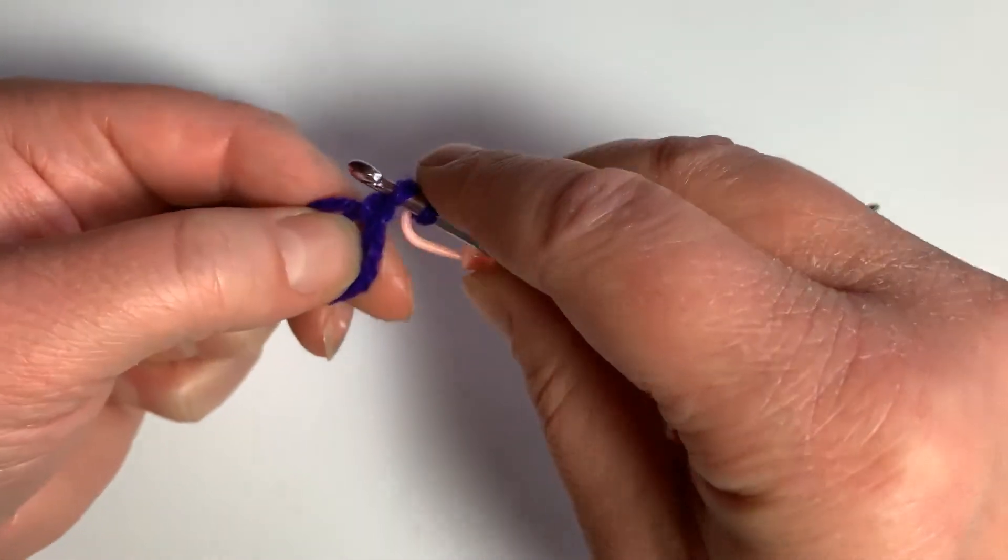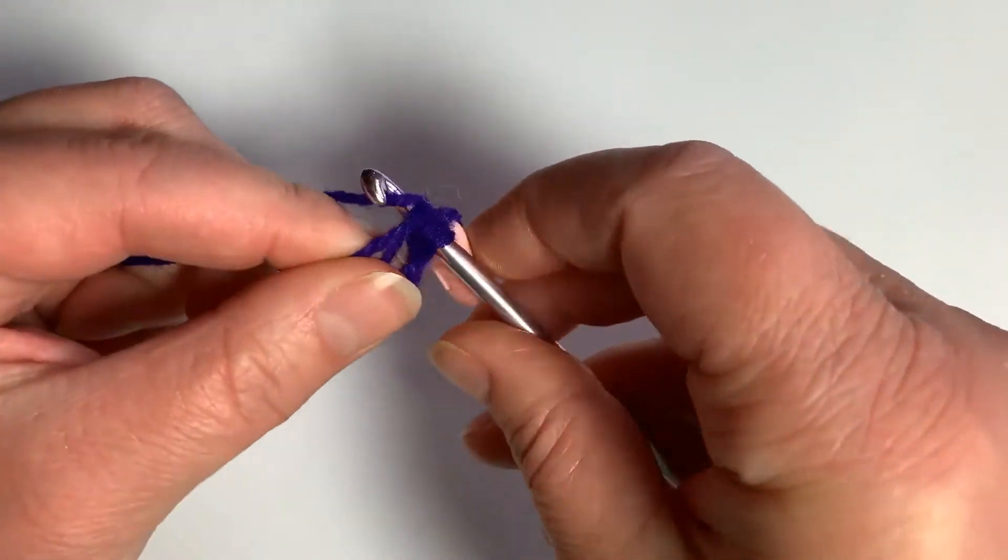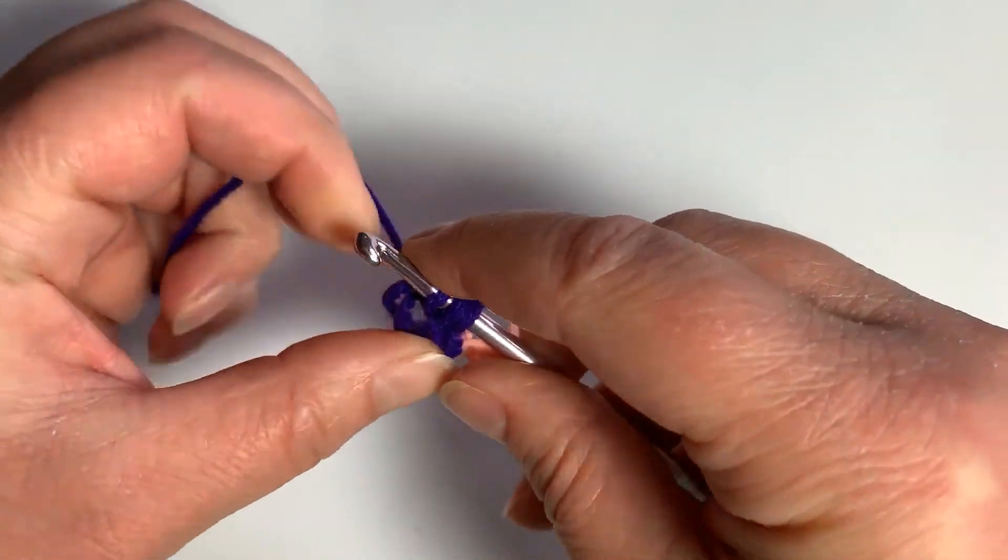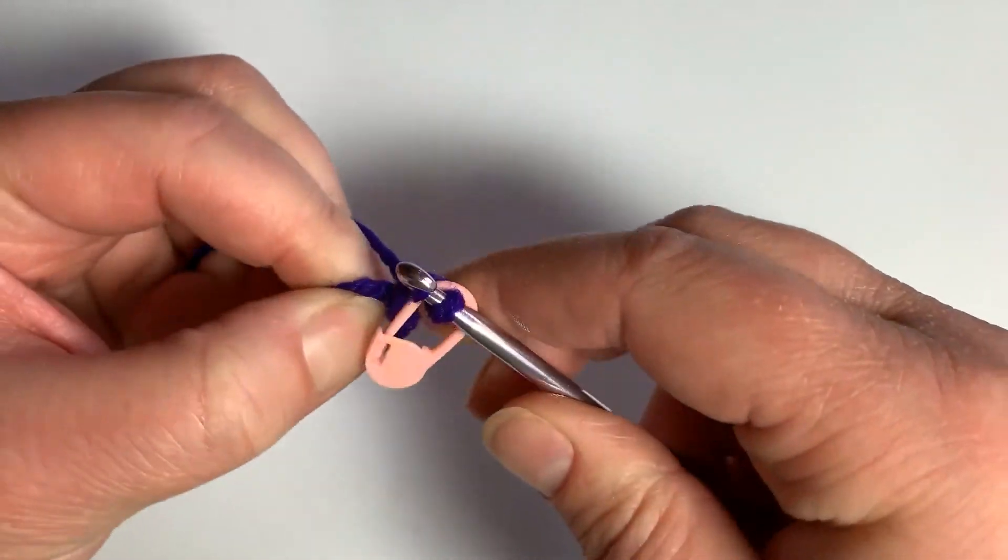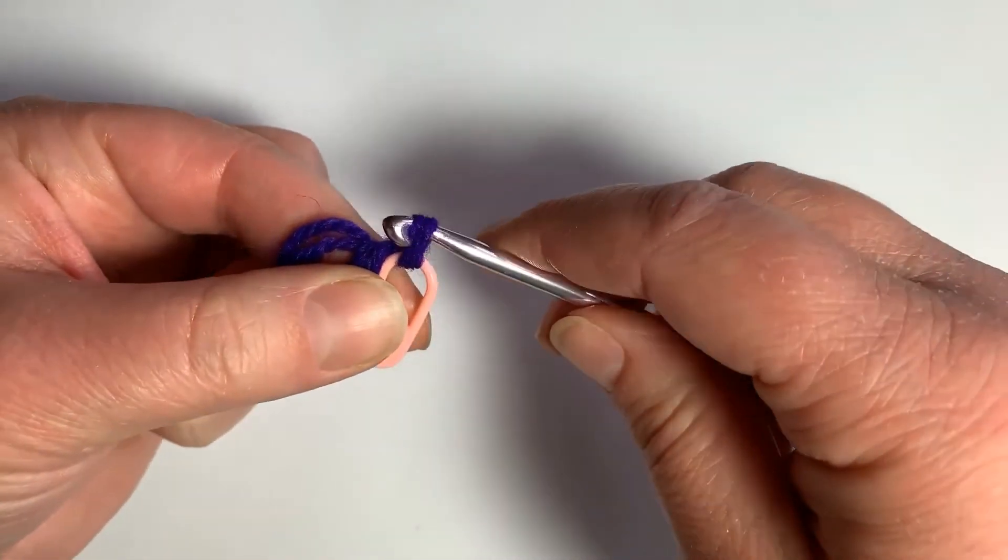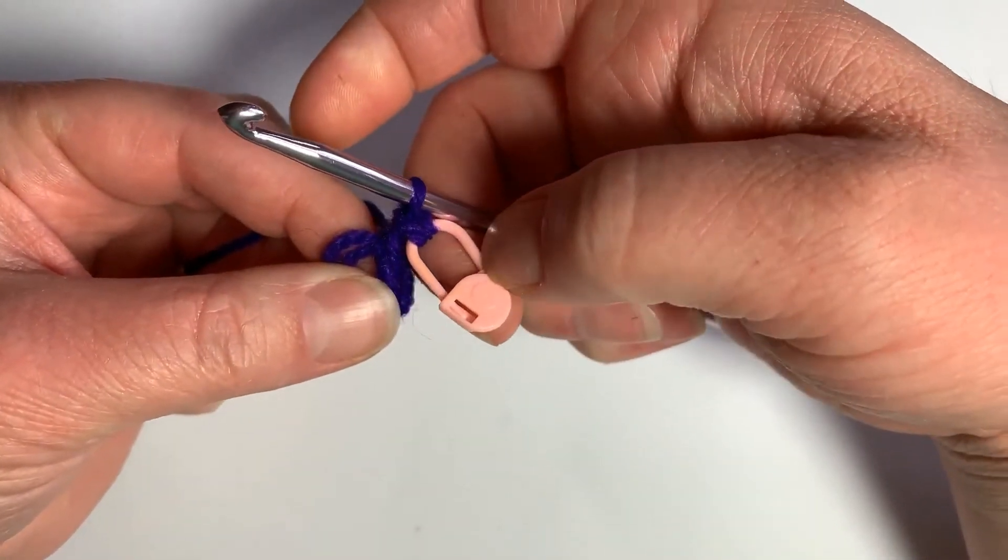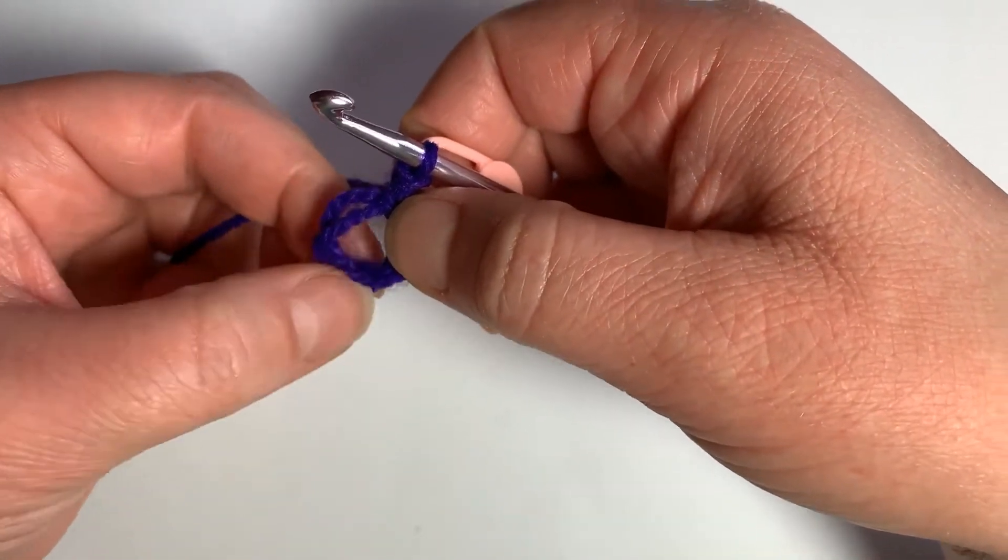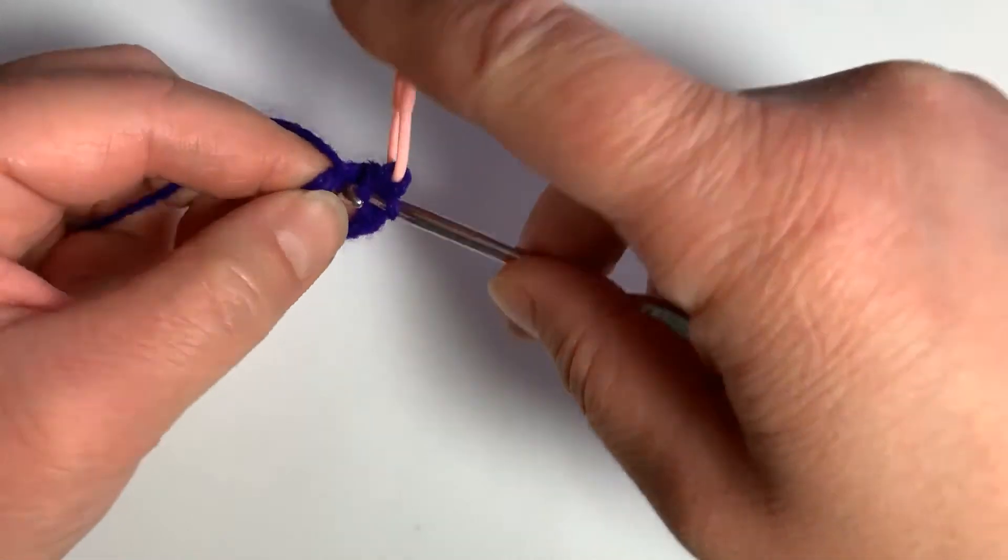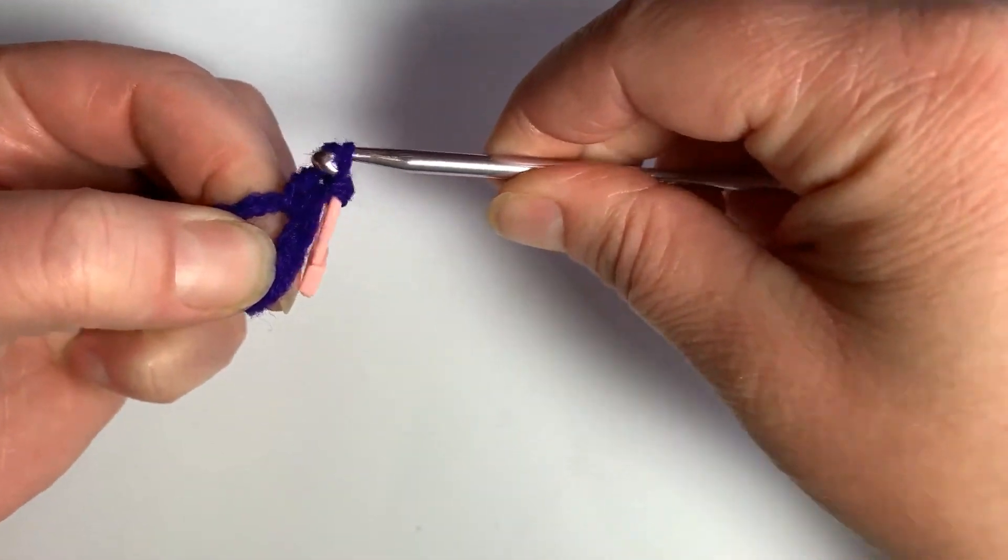Loop it around. Insert your hook into the circle. Yarn over. Pull up a loop. Yarn over. Pull through all three loops. So we need to keep this stitch marker here, otherwise we lose the top loops of our half double crochet. And then you would continue to half double crochet the number indicated in your pattern.